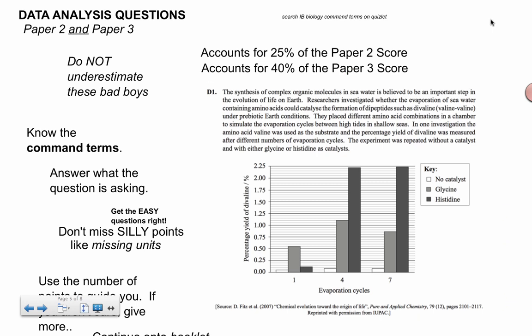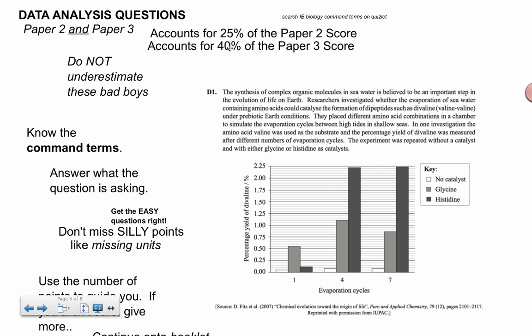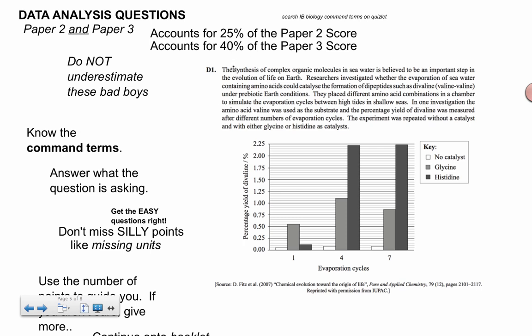But the sad thing is that you are totally underestimating the importance of these data analysis questions. Big chunk of Paper 2, big chunk of Paper 3. If you add up the total number of points, it's about 18 points out of 60-something points for Paper 2. That's a quarter of the Paper 2 score. And for the options, for higher level at least, it's 40% of the Paper 3 score. So if you want to get those maximum scores, the sixes and the sevens that you're aiming for, you really got to make sure you're doing a good job on these questions.